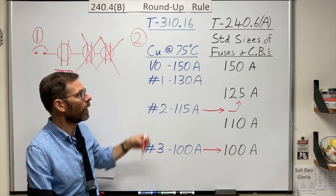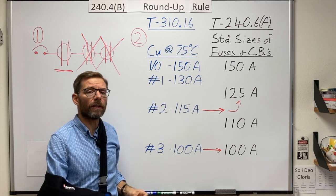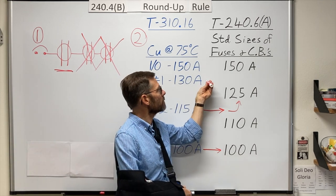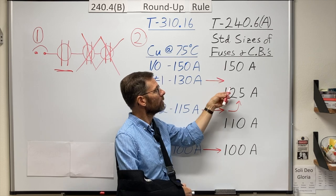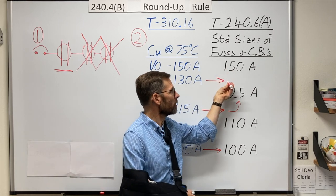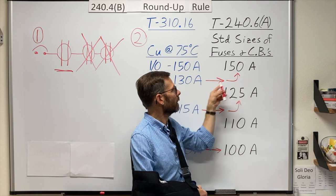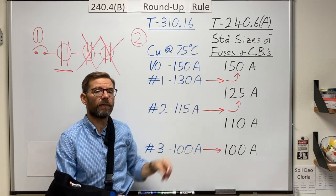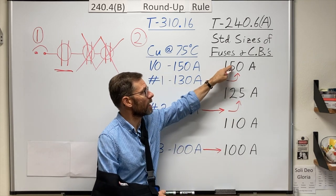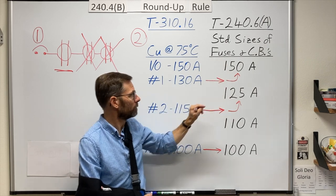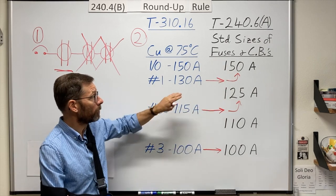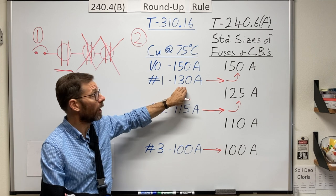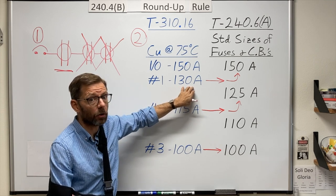So what do you think for the number one conductor rated at 130 amps? Comes in between two standard sizes. So yeah, I can protect this with the 150 amp breaker. There's no standard sizes between these two. But, remember that I cannot put more than 130 amps of calculated load on this conductor.